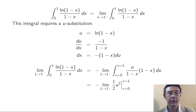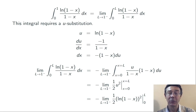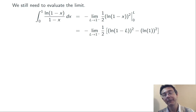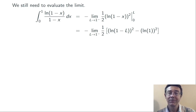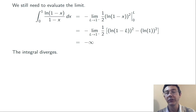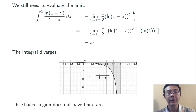I want to plug in x equals 0 and x equals L, but those are x values, so I need to replace u with the natural log first. Substituting in L and 0 and subtracting, I'm ready to evaluate the limit. Notice that the natural log of 1 is 0, so that term goes away completely. When I evaluate the limit as L goes to 1 from the left, I'm getting the natural log of 0, which is negative infinity. Squaring that and applying the negative sign out front, this improper integral diverges. Looking back at the picture, this means the area between the x-axis and the graph between 0 and 1 is not finite.